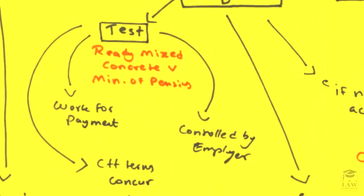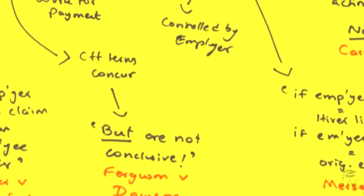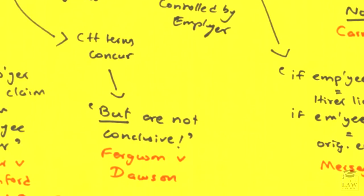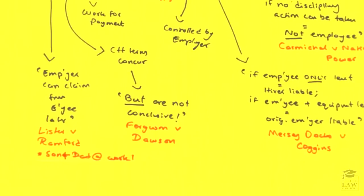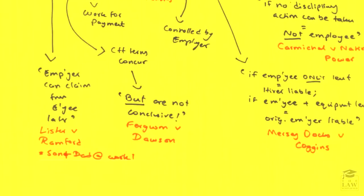As such, the test now is seen in Ready Mix Concrete and the Minister of Pensions. There are several elements to look at in order to determine if a person is in fact an employee. For instance, indicators such as whether the work is being conducted for payment — but this is not conclusive in itself, as it might be a contracted party. You can also look at the control aspect, and a new element is whether the employment contract stipulates that the person is an employee. However, this is not conclusive as seen in Ferguson and Dawson, where employment contracts might be quite vague and may infer employee status when in fact the person is not an employee.